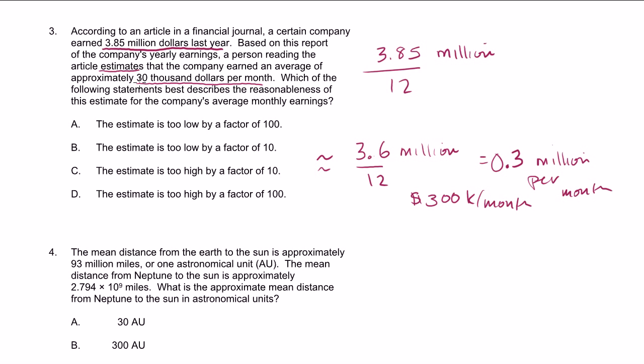Now, someone estimated that they made $30,000 per month. So they were too low by a factor of 10. You would have to divide the correct estimate by 10 to get their estimate. So their estimate is too low by a factor of 10. That is choice B. Another way you could have thought about this is instead of writing 3.85 million, you could have written that as 3,850,000 divided by 12, or you could have said that's approximately 3,600,000 divided by 12. And then you would have said, OK, that's 300,000. You would have gotten the same answer, which is 10 times more than their estimate. Or their estimate was too low by a factor of 10.